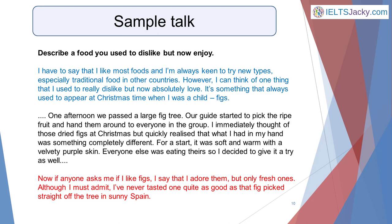Describe a food you used to dislike but now enjoy. I have to say that I like most foods. I'm always keen to try new types, especially traditional food in other countries. However, I can think of one thing that I used to really dislike but now absolutely love. It's something that always used to appear at Christmas time when I was a child — figs. One afternoon we passed a large fig tree. Our guide started to pick the ripe fruit and hand them around to everyone in the group. I immediately thought of those dried figs at Christmas but quickly realised that what I had in my hand was something completely different. For a start, it was soft and warm with a velvety purple skin. Everyone else was eating theirs so I decided to give it a try as well. Now, if anyone asks me if I like figs, I say that I adore them but only fresh ones. Although I must admit, I've never tasted one quite as good as that fig picked straight off the tree in sunny Spain.